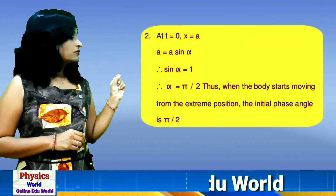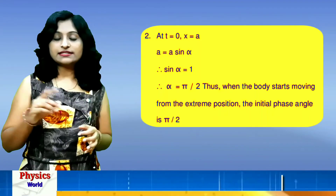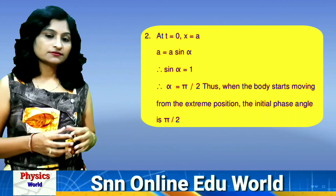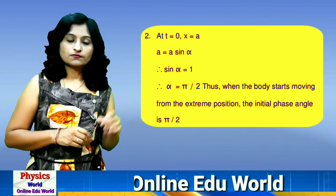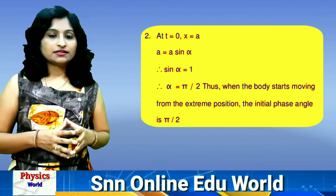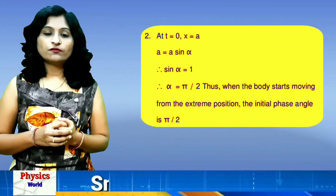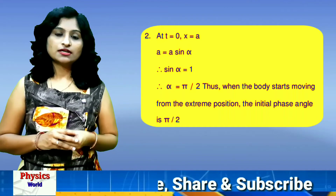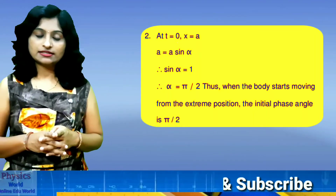The second case: if the particle starts from the extreme position. Then T = 0 and x = A (the highest amplitude). Substituting: A = A·sin(ω·0 + α), so A/A = 1. When sin(angle) = 1, the angle is 90° or 270°. So when the body starts from the extreme position, the phase angle is 90° or 270°.